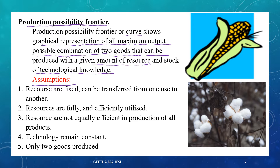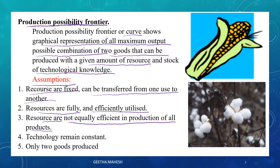To understand this concept, let us first discuss the assumptions. The first assumption is that resources are fixed and can be transferred from one use to another — meaning resources can be used for production of good A or good B. The second is that resources are fully and efficiently utilized, so there is no wastage or underutilization. The third is that resources are not equally efficient in the production of all goods, meaning resources suited for good A may not be suitable for good B.